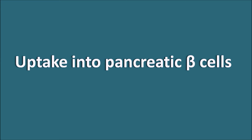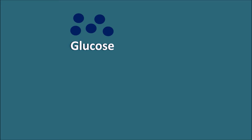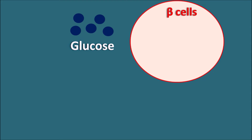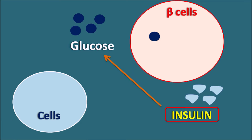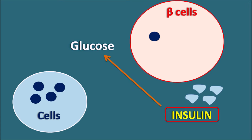Now let us see the uptake of glucose into the pancreatic beta cells. Glucose is a signal for insulin release from these cells. Whenever glucose levels increase in the systemic circulation, glucose can enter beta cells, stimulating insulin release. This insulin then acts on cells to control glucose levels and promote glucose uptake. So glucose is required for insulin release, and insulin is required for glucose uptake. Again, glucose transporters are required for glucose entry into the beta cells.